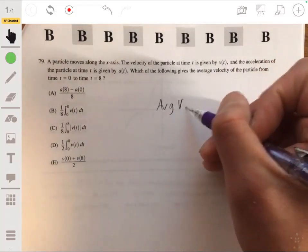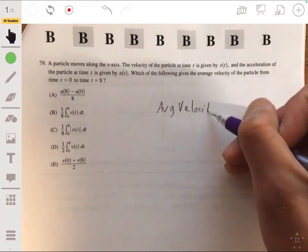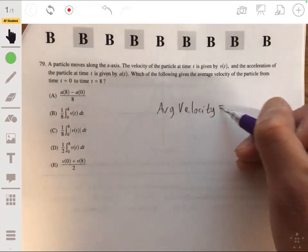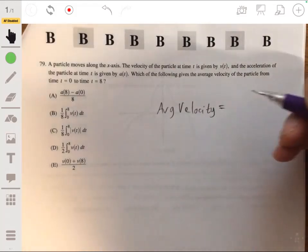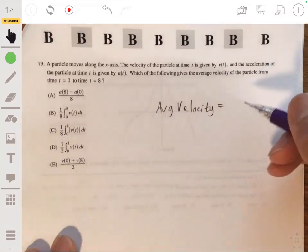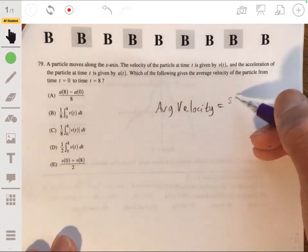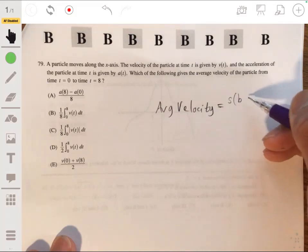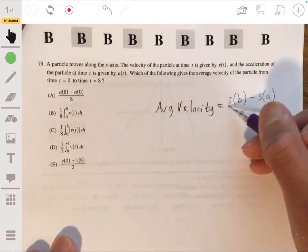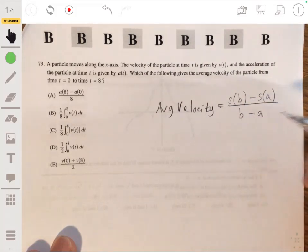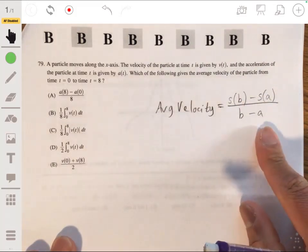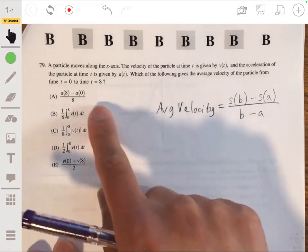So average velocity is just a change in position over an interval. So if you're talking about average velocity on some interval from a to b, it would just be the position at point b minus position at point a over b minus a. This is one way of doing it. But we're not given this.